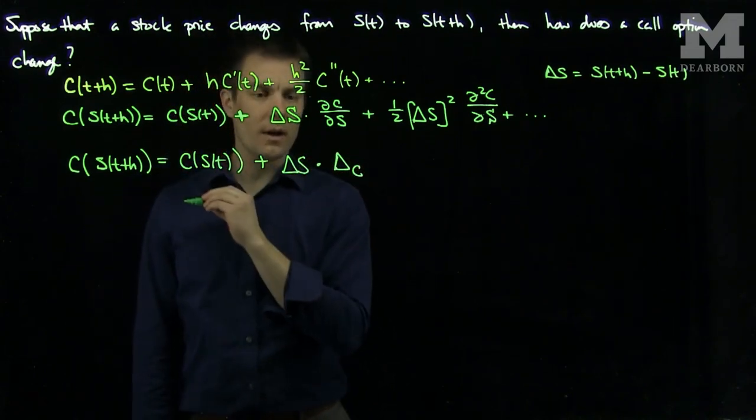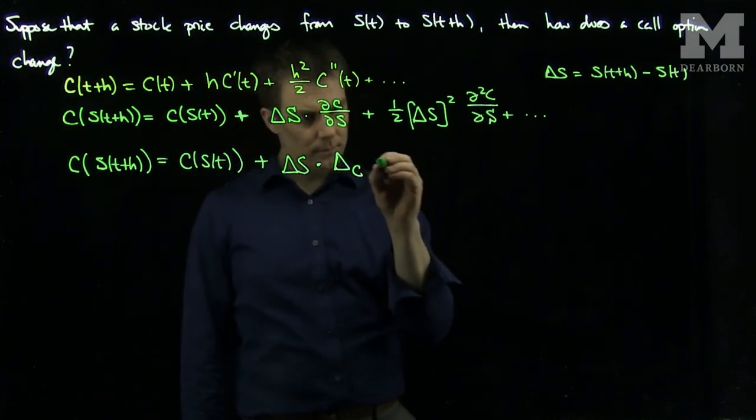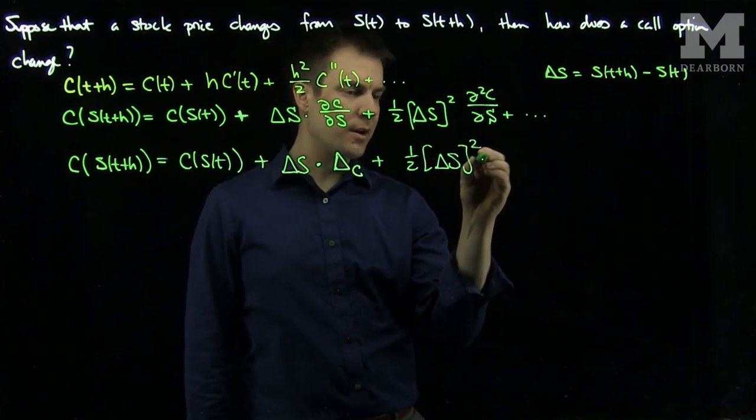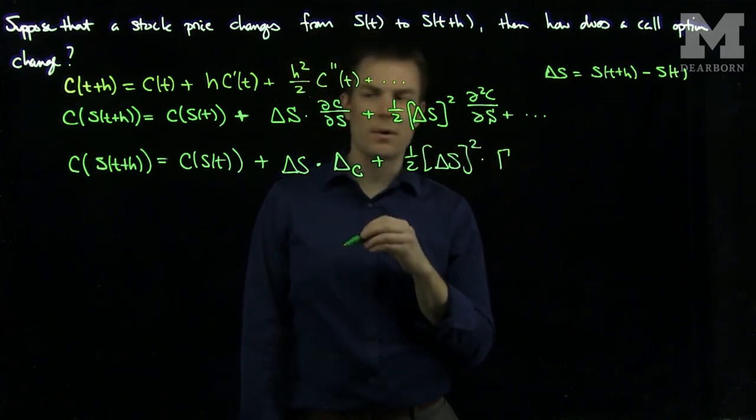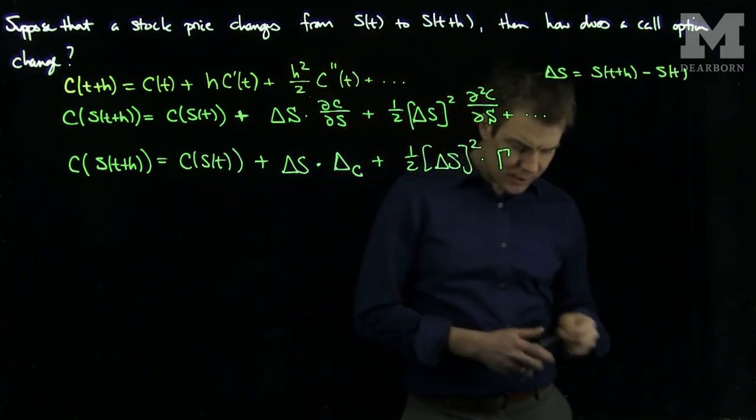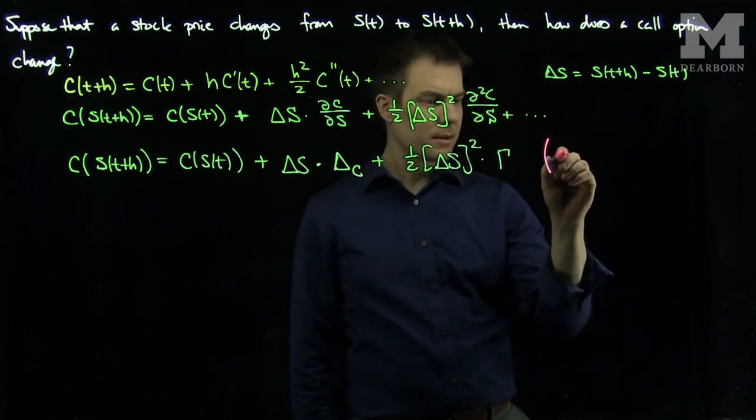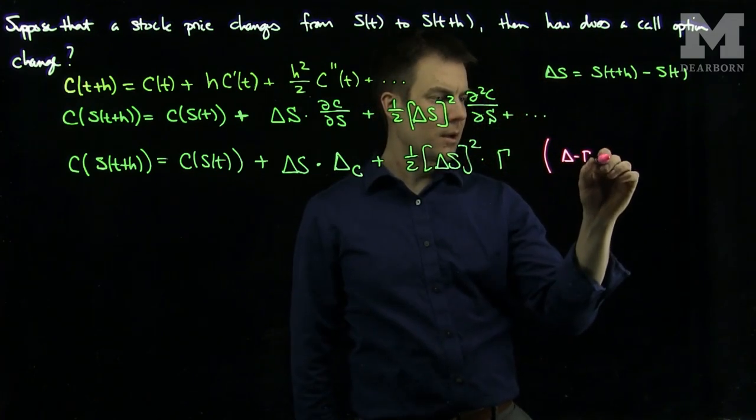Plus one-half the change in S squared times the gamma of the call option, and so this expression over here is referred to as the delta-gamma approximation.